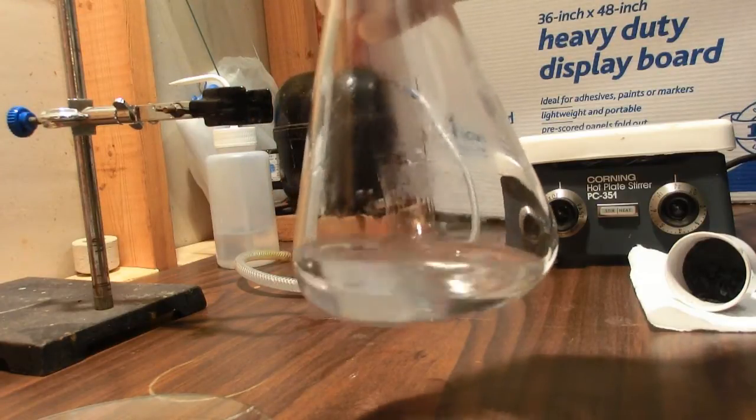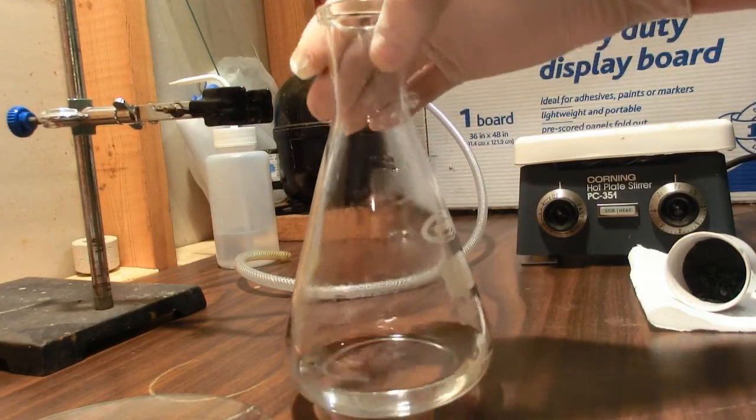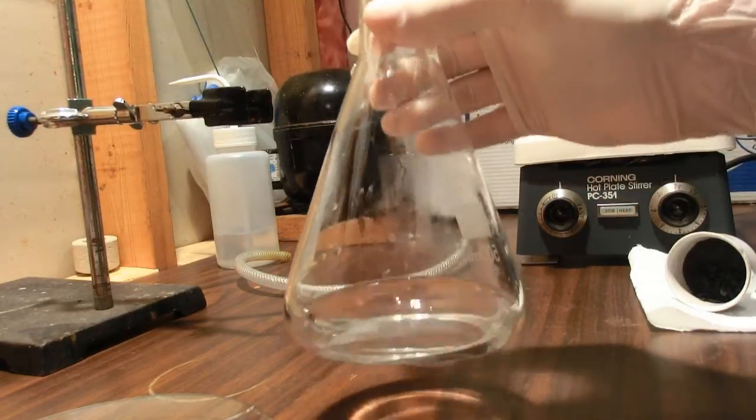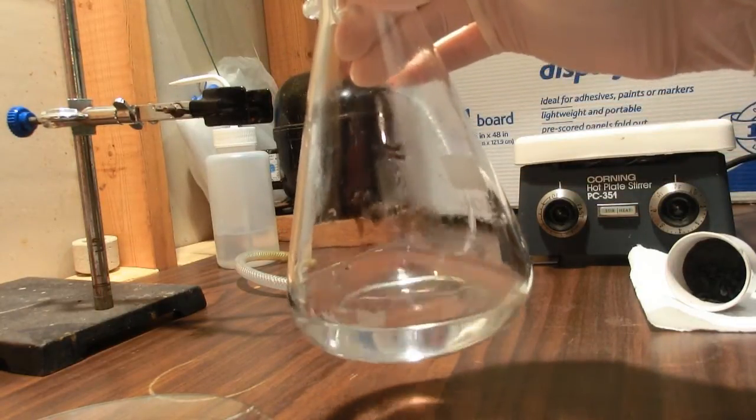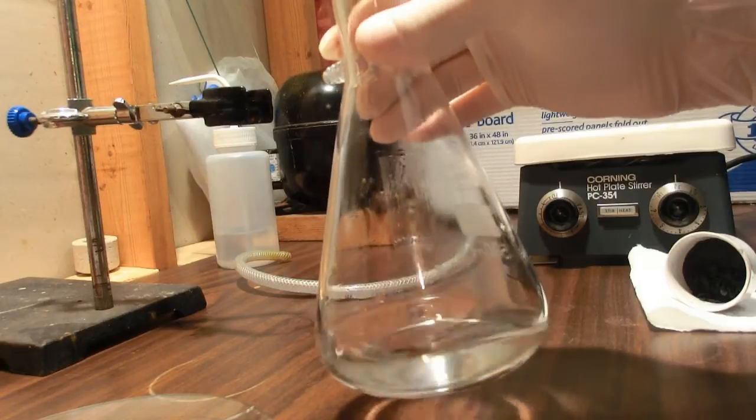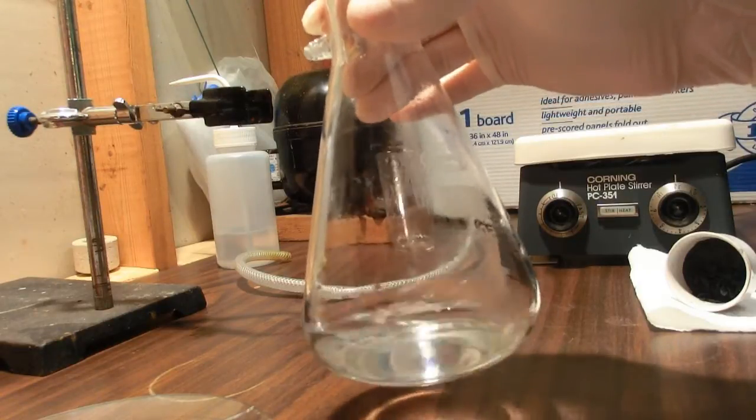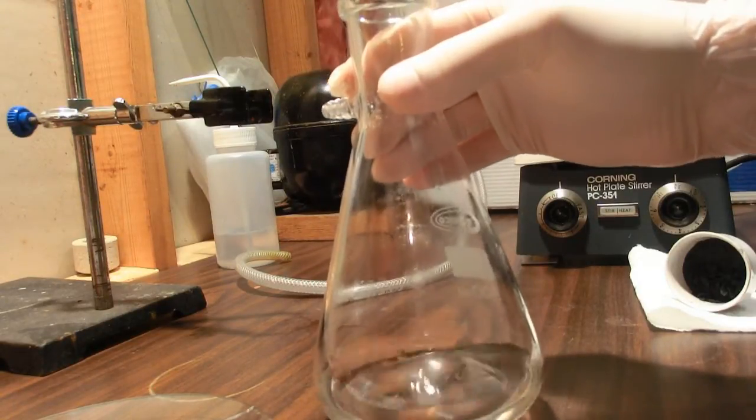So the next step we're going to do is precipitate basic lead carbonate from this by adding baking soda or sodium bicarbonate, and this will make our white lead.